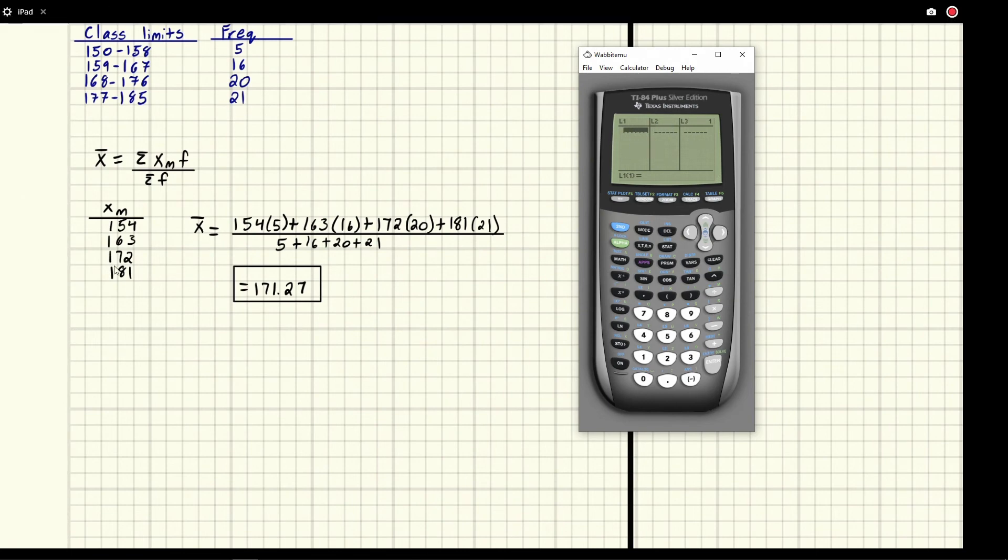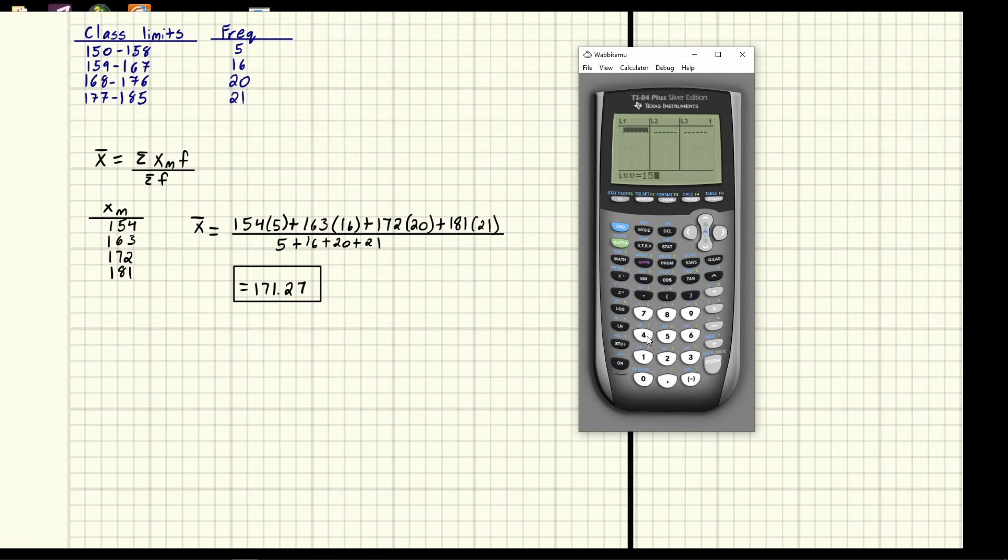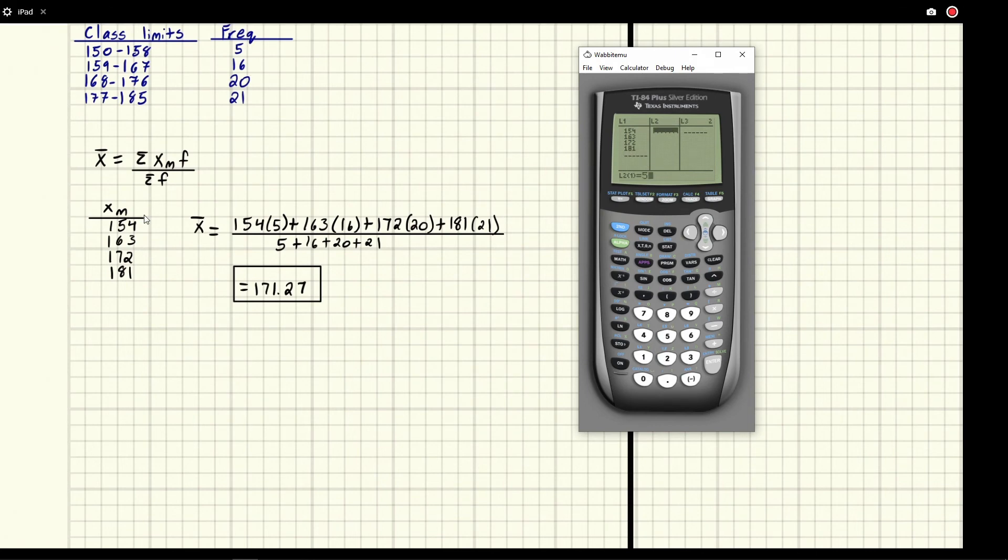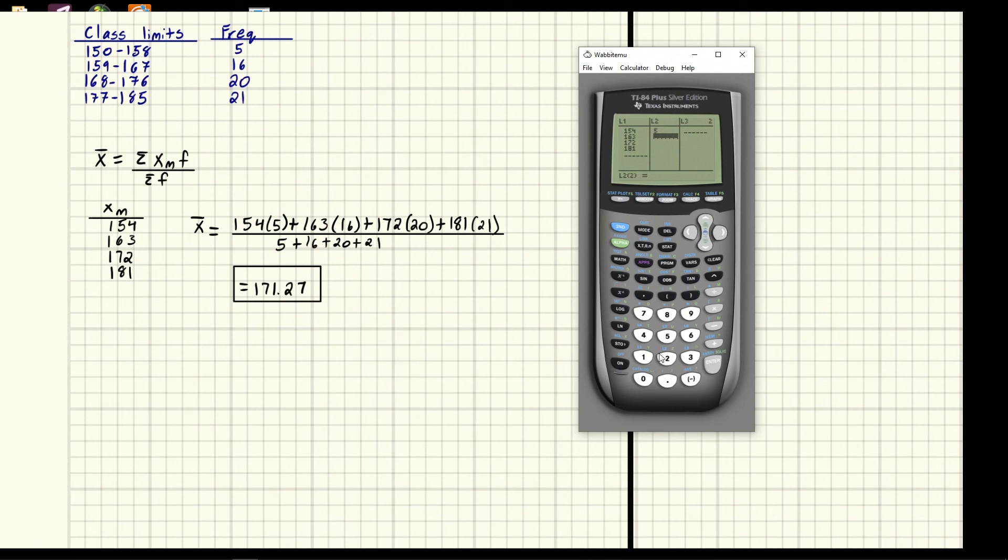Then we're going to put frequencies second. So our midpoints are 154, 163, 172, and 181. Our frequencies we're saying that there are five 154s. There are 16 163s. There are 20 and this follows directly. We're just doing the same thing we did in the other video where we explain this a bit more.